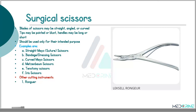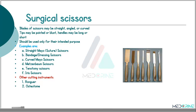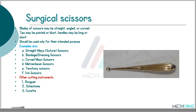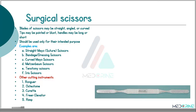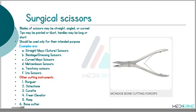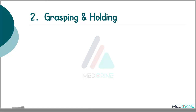Other cutting instruments include rongeurs, which are used to cut bones — for example Ruskin rongeur and Leksell rongeur. We also have osteotomes and chisels, bone curettes such as the silver spoon, a freer elevator, rasps, and bone cutters like Maclindo bone cutting forceps.